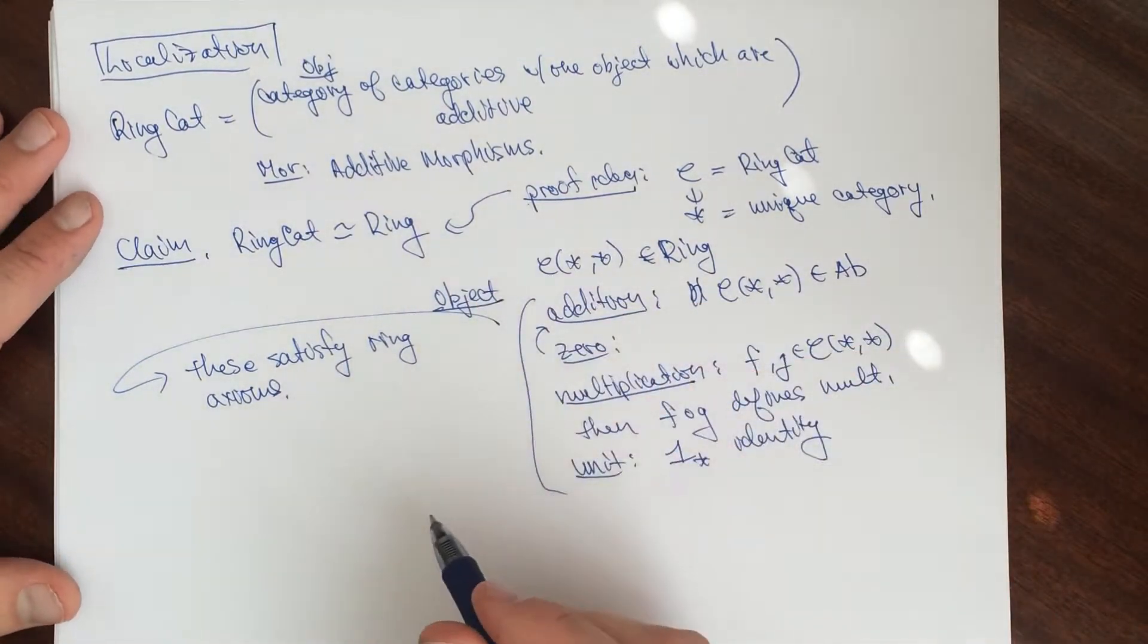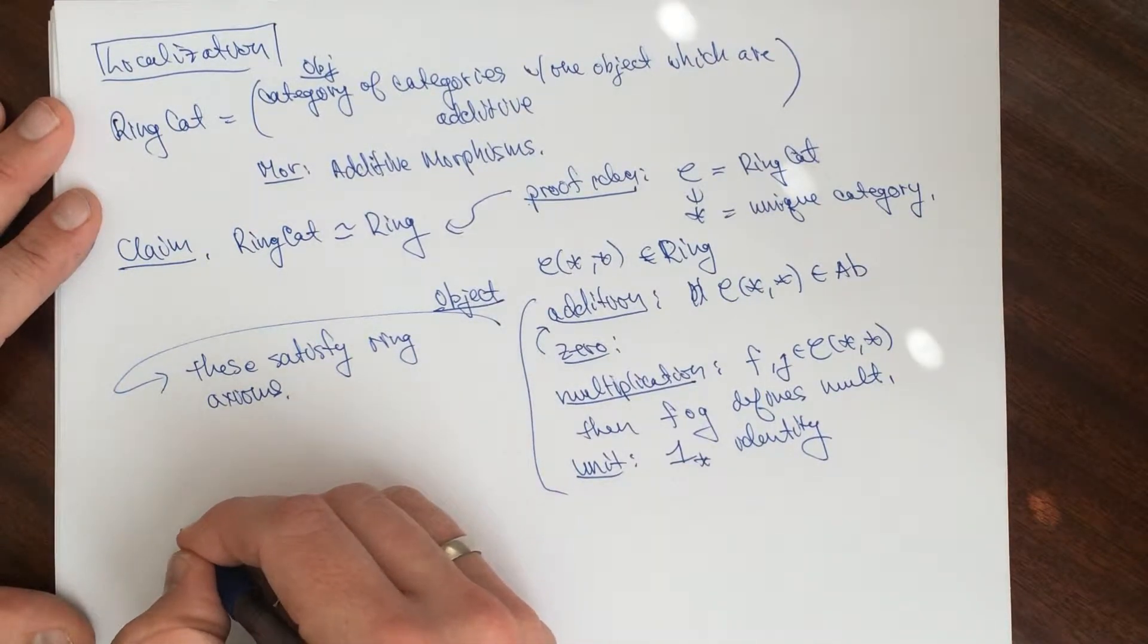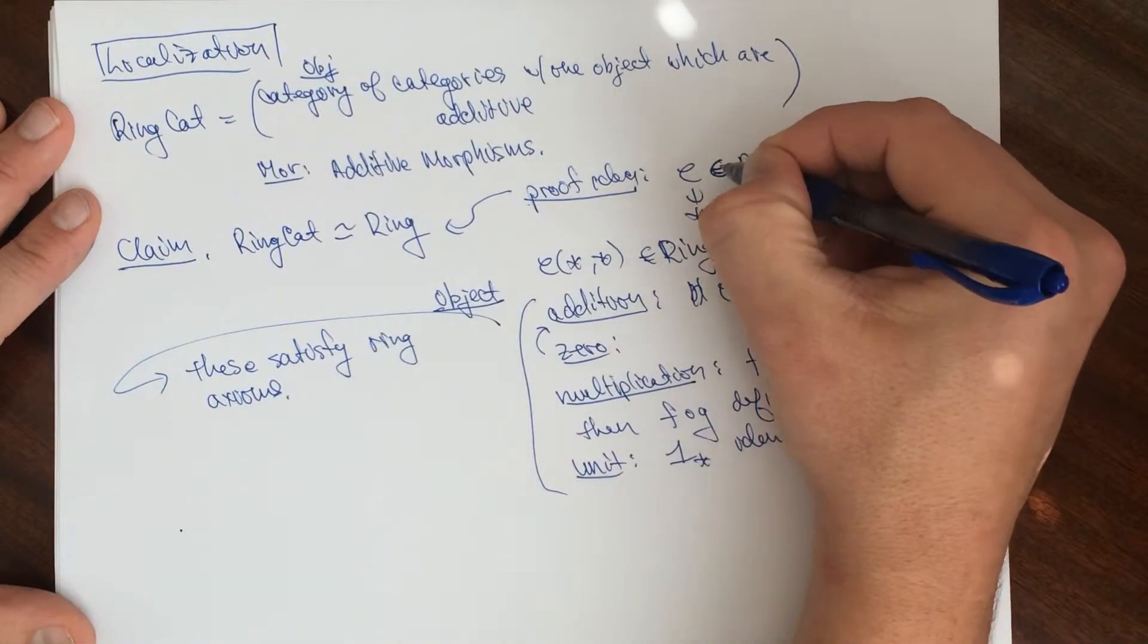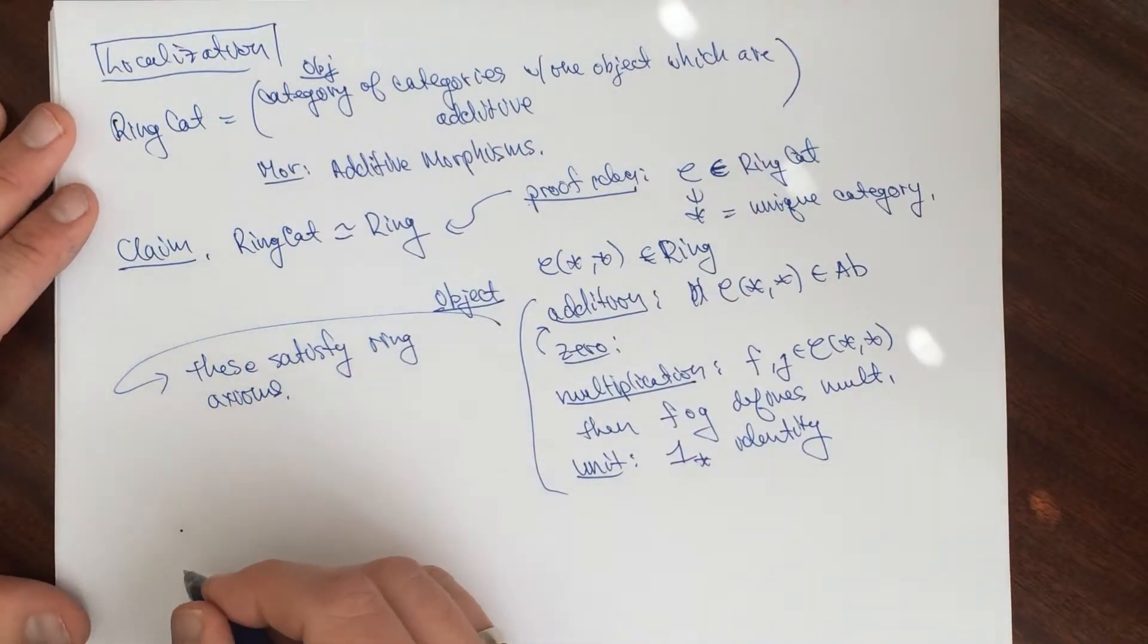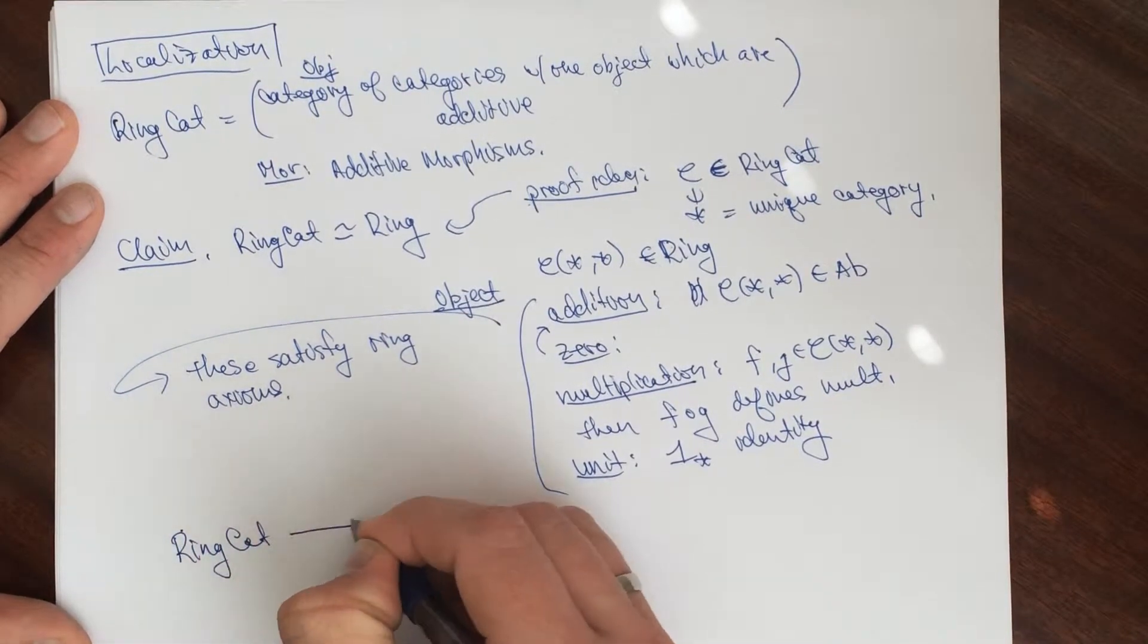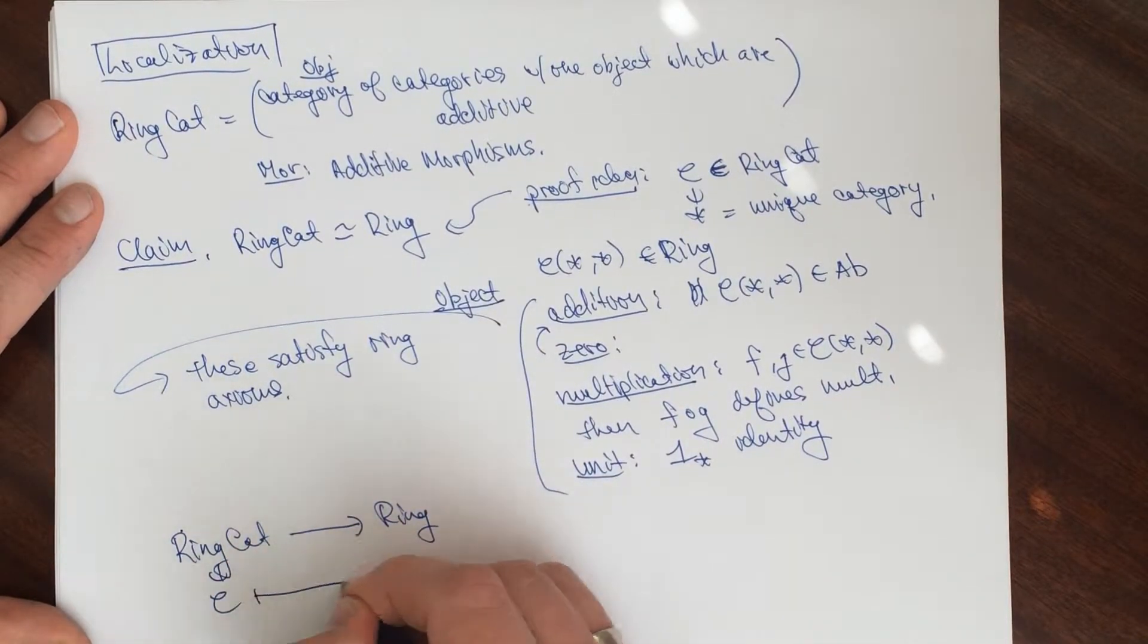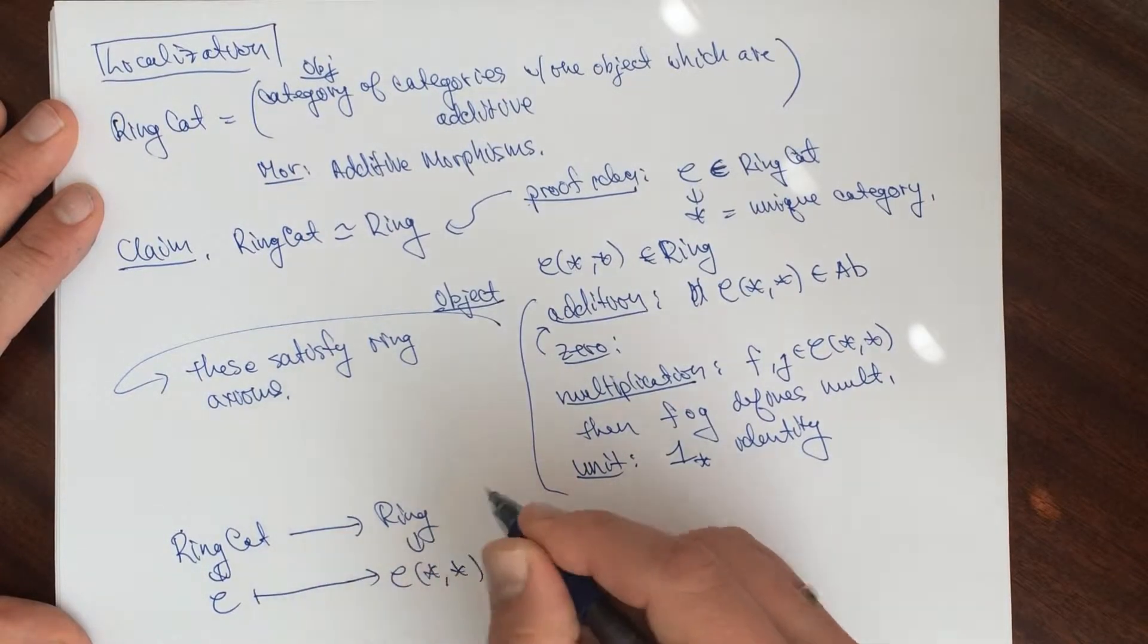I claim that this is a functor now. The thing where it says we have, this is supposed to be here. This is in there. Now I claim this is a functor. I claim that this map here to the category of rings given by taking a C to this guy here. This is functorial.